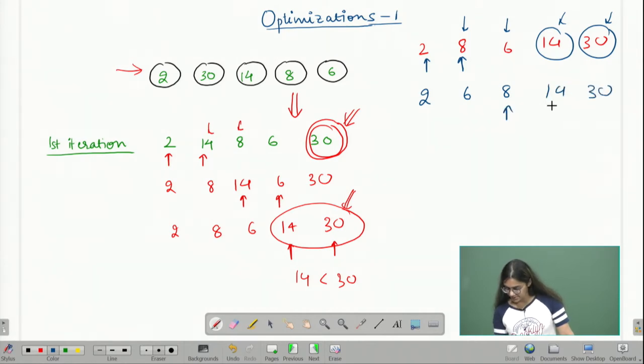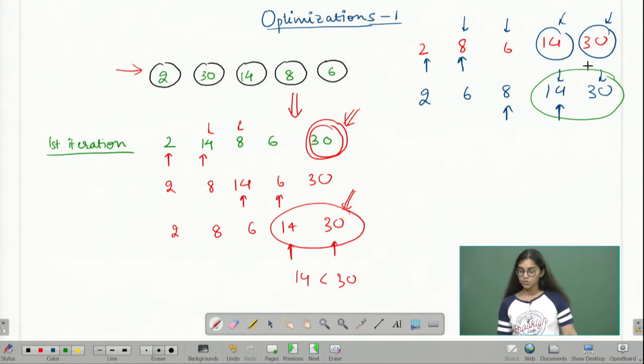Then I compare 8 and 14, which are in the correct relative order, and then I compare 14 and 30, which are again in the correct relative order. Again, we notice that the last two elements, which were already in the correct positions, do not undergo any changes. We can say that in any given ith iteration, the last i minus 1 elements are already in the correct position, so I do not need to check if I need to swap them or not.